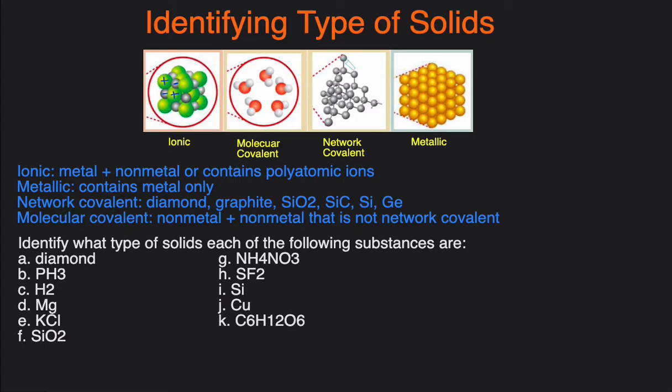And network covalent compounds are just compounds where atoms are bonded to each other through very strong covalent bonds. Then lastly you have molecular covalent. So covalent is broken down into network covalent and molecular covalent. Molecular covalent compounds are compounds that just contain non-metals that aren't network covalent compounds, and they exist as individual molecules bonded through weak intermolecular forces instead of strong covalent bonds.